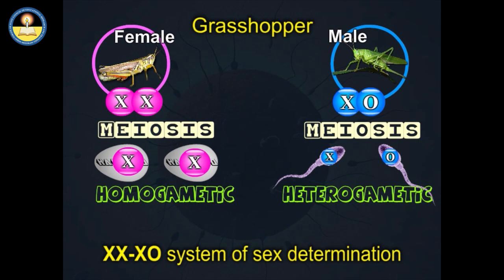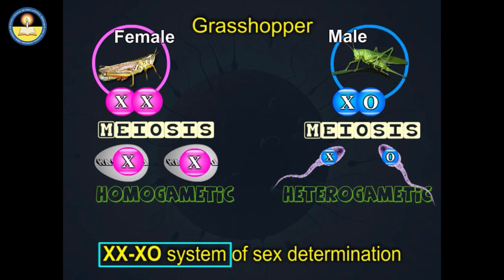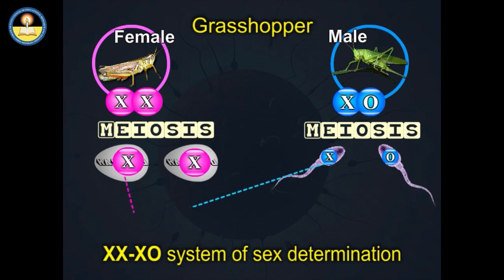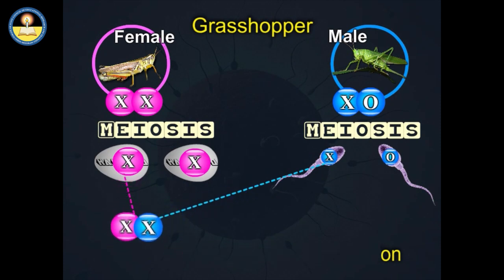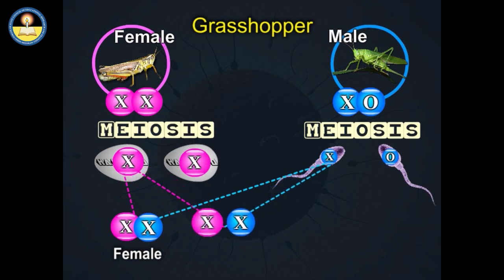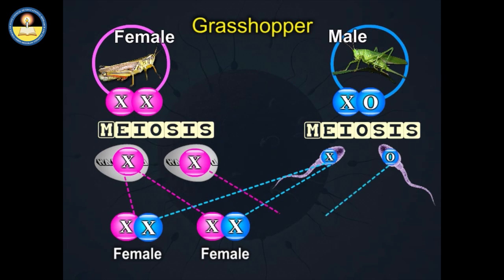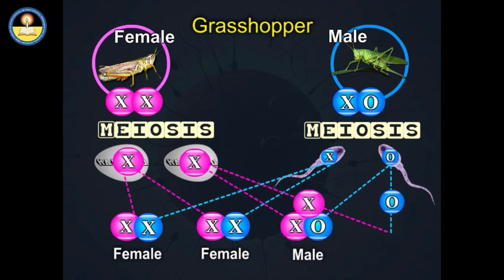Females, which produce gametes that are all the same with respect to sex chromosomes, are the homogametic sex. In the XO system, the sex of an individual organism is therefore determined by which type of male gamete fertilizes the egg. X-bearing sperm unites with an X-bearing egg to produce an XX zygote, which eventually develops as female. Sperm lacking an X chromosome unites with the X-bearing egg to produce an XO zygote, which develops into a male.